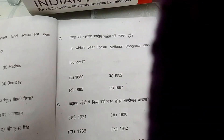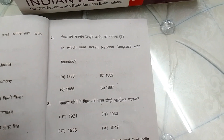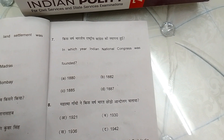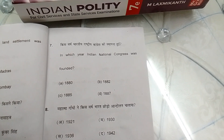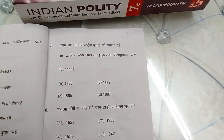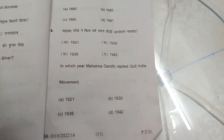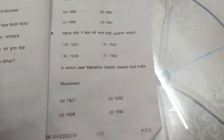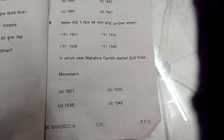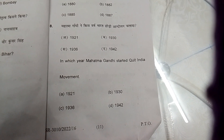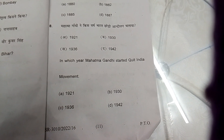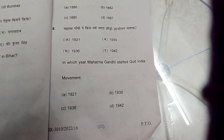MCQ 7: In which year was the Indian National Congress founded? A. 1880, B. 1882, C. 1885, D. 1887. MCQ 8: In which year did Mahatma Gandhi start the Quit India Movement? A. 1971, B. 1930, C. 1936, D. 1942.